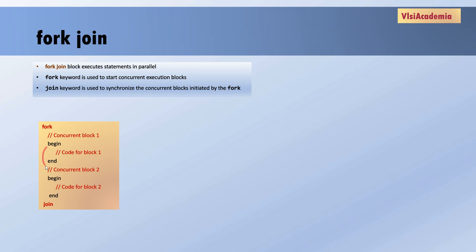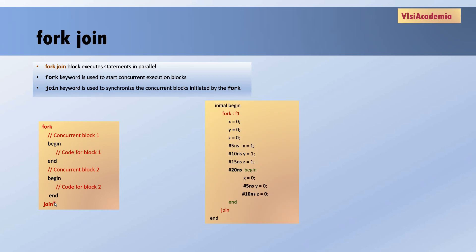Let's understand this with an example. Inside the fork-join I have defined two blocks, one inside the first begin-end and one inside the second begin-end. These are the two parallel blocks. Whenever the fork keyword is encountered, these two begin-end blocks will start executing in parallel. When the join keyword is encountered, it synchronizes these parallel blocks so that it will only move on when all parallel blocks have finished.